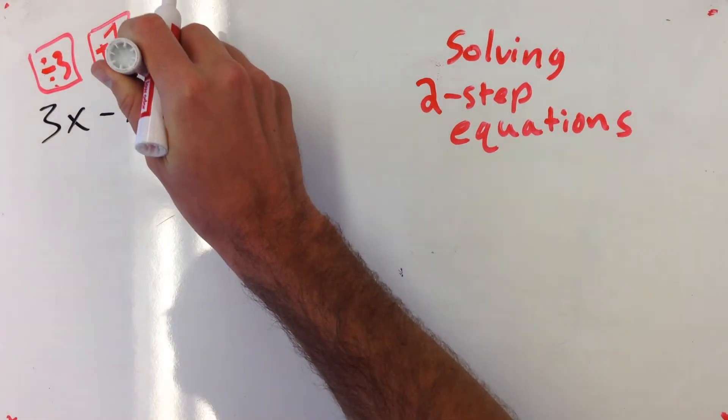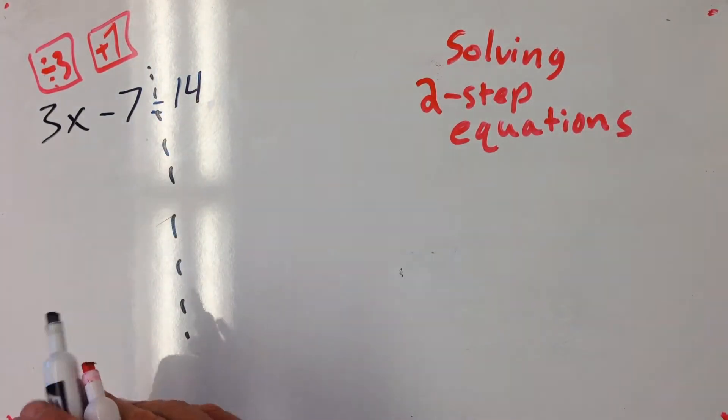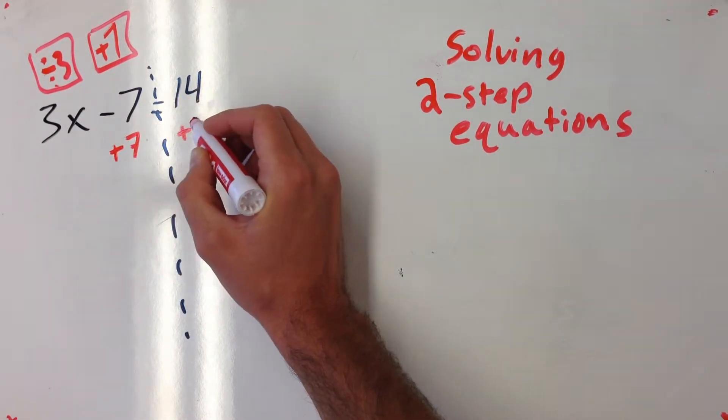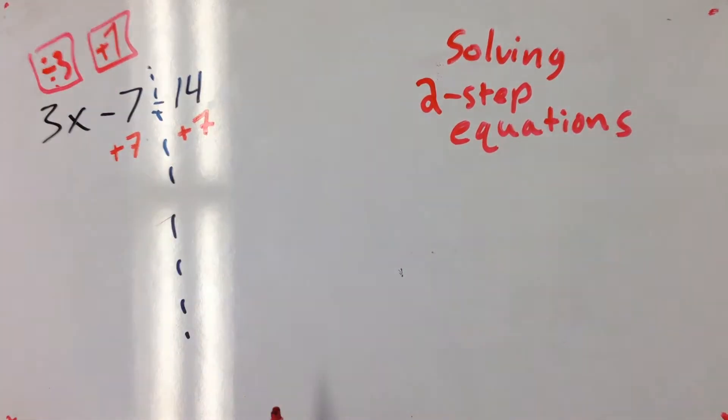Draw this down here so I can make sure I'm doing this on both sides of the equal sign. What I'm going to do is I'm going to add 7 to both sides because I'm going to start taking care of it.